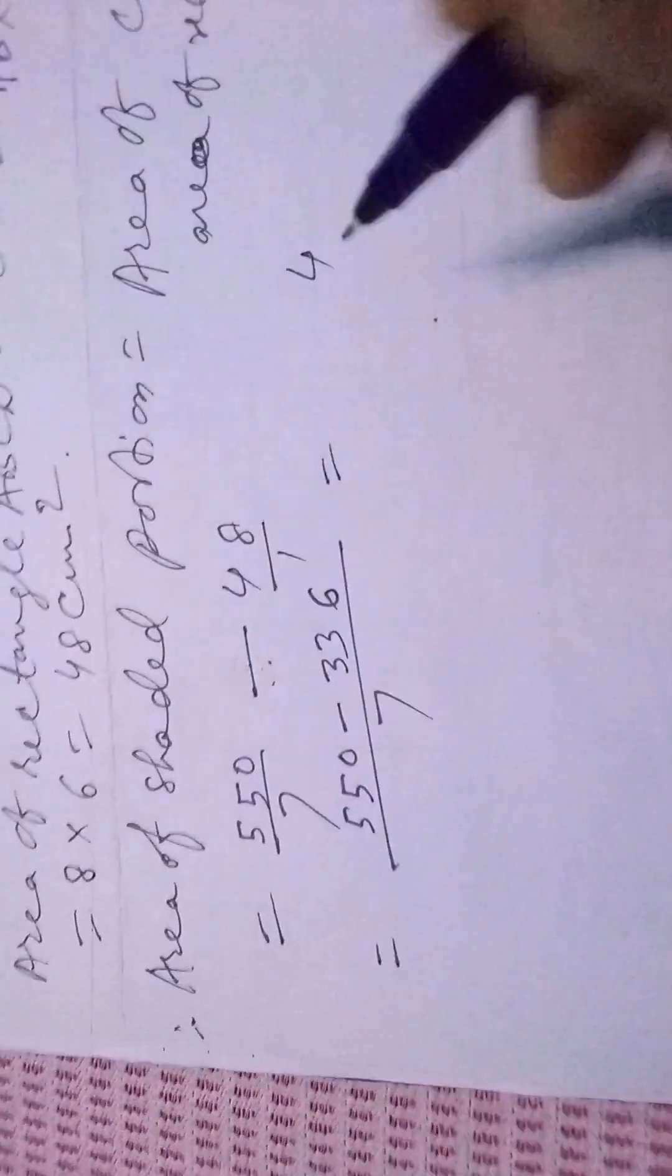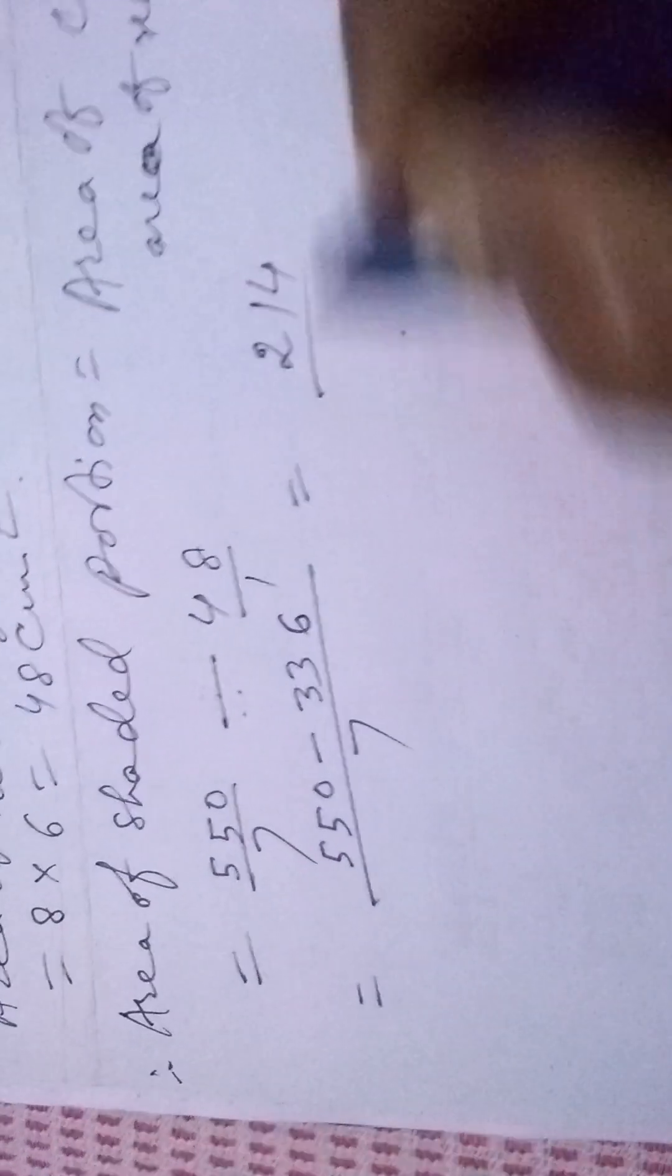You subtract: 10 minus 6 is 4, 5 minus 3 is 2, giving us 214 by 7.